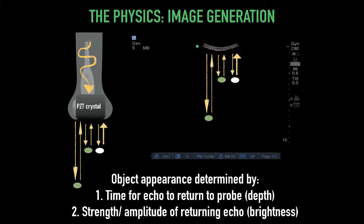Object appearance is determined by the time for the echo to return to the probe (depth) and the strength or amplitude of the returning echo (brightness). The vertical position of the echo pixel on screen is based on the time delay between emission and return of the ultrasound beam. Velocity is assumed constant within soft tissue, so quickly returning echoes reflect superficial structures and slowly returning echoes reflect deeper structures. The horizontal position is based on the receiving piezoelectric crystal's location along the transducer. This horizontal and vertical pattern of dot brightness and positioning creates B-mode, or brightness mode, often called the 2D image.